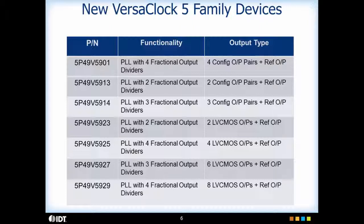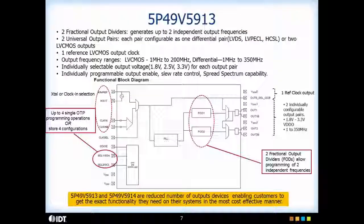The other four devices only have LVCMOS outputs. So depending upon your application, if you need 3, 5, 7 or 9 LVCMOS outputs, one of these devices can be selected. This slide shows you the block diagram for the two universal output devices. These devices have a reduced number of outputs with the same flexibility, programmability, and performance as the flagship device, enabling customers to get the exact functionality they need in the most cost-effective manner.